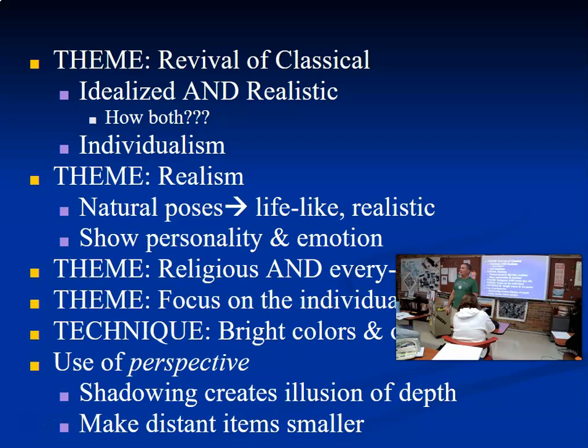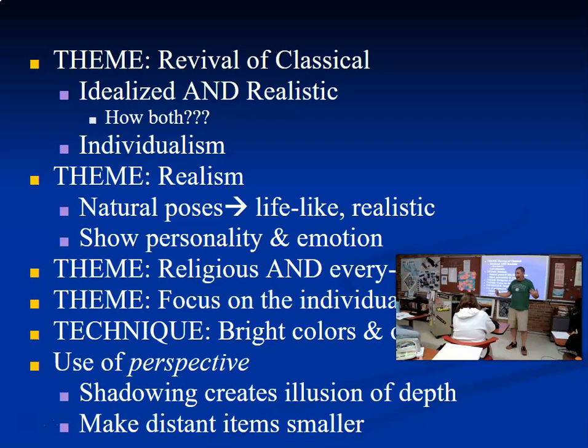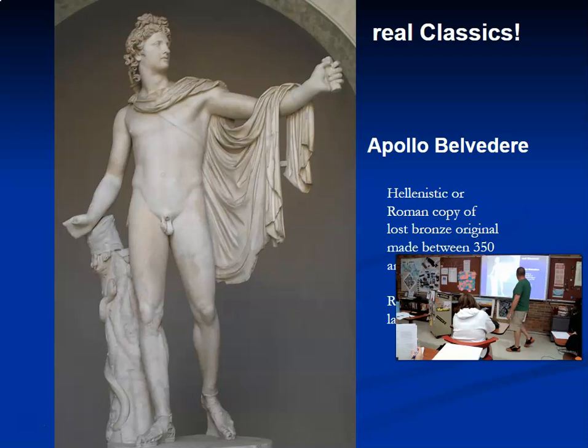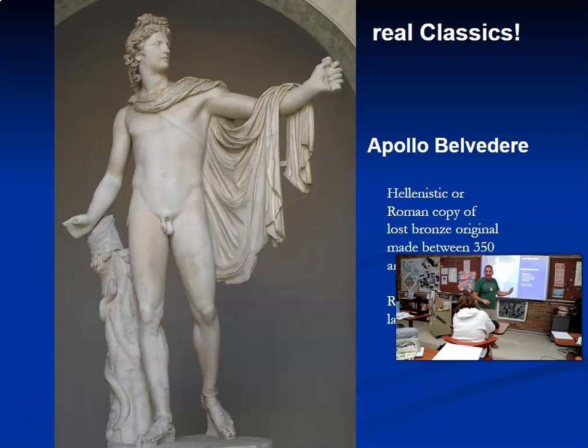Before we look at Renaissance paintings, I want to look at actual classical works. The next three statues are from classical, Greco-Roman times, and they all happen to be in the Vatican Museums. This is the Apollo Belvedere — a classical statue, a Roman copy of a Greek original. The Greek original was made around 300 B.C., and they found it in Italy in the 15th century, in the 1400s.